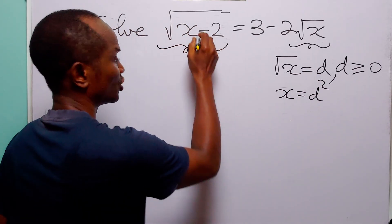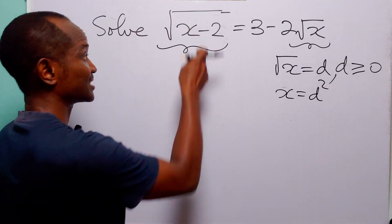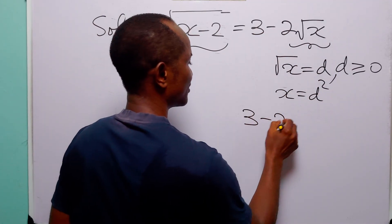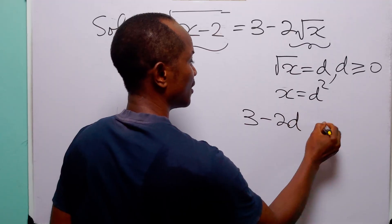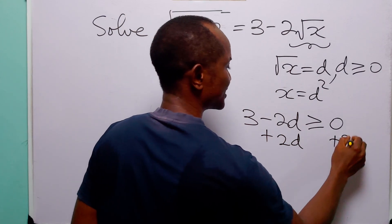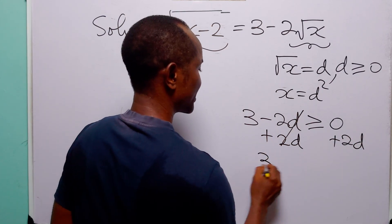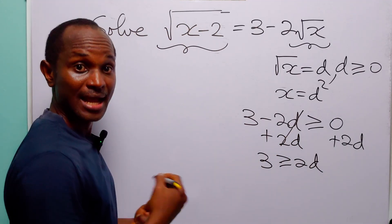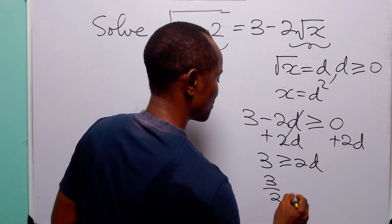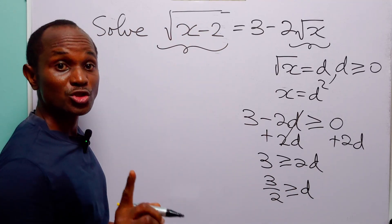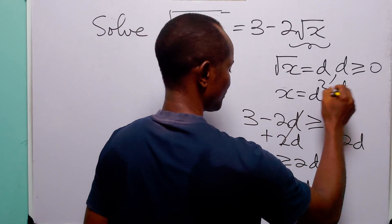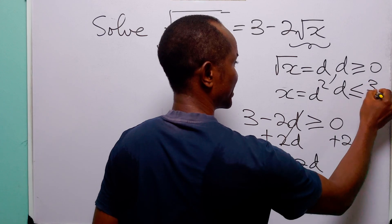Now, look at the left-hand side of this equation. You will see another square root, and you know that this square root must also be positive. So that means that the right-hand side — that is 3 minus 2d — must also be greater than or equal to zero. When we add 2d to both sides of this inequality, we have that 3 must be greater than or equal to 2d. And when we divide both sides by 2, we have that 3 over 2 must be greater than or equal to d. So not only must d be greater than or equal to zero, we also have that d must be less than or equal to 3 over 2.